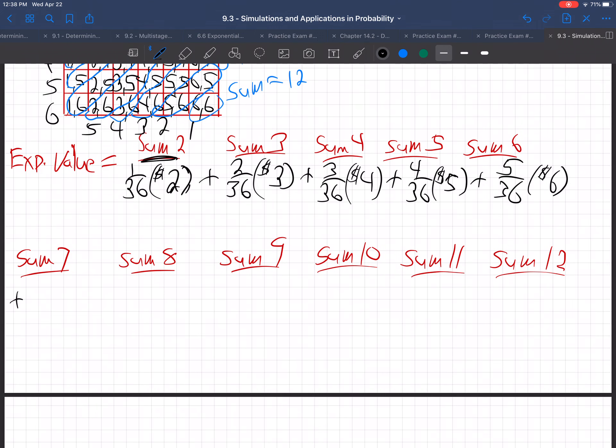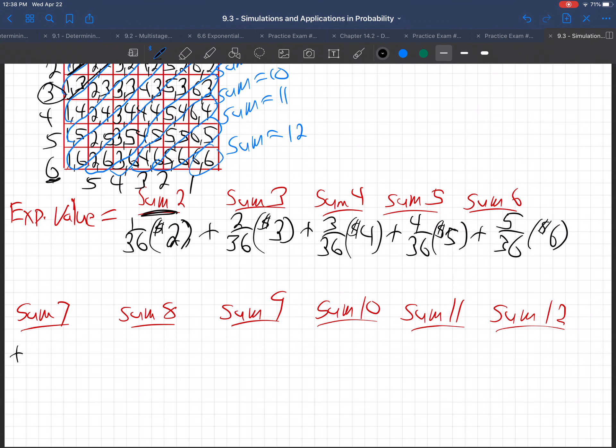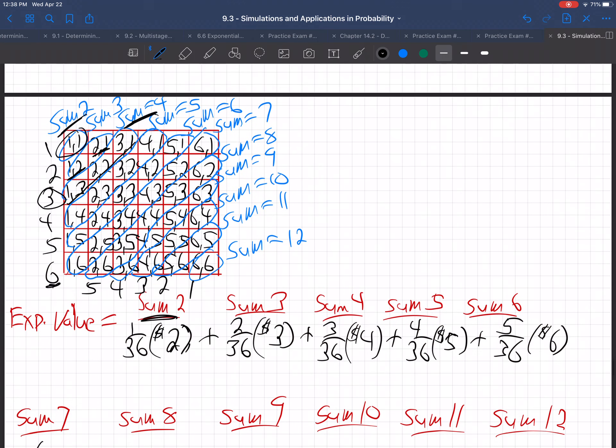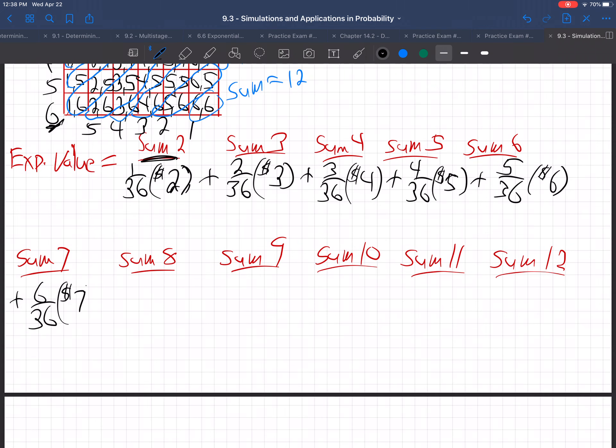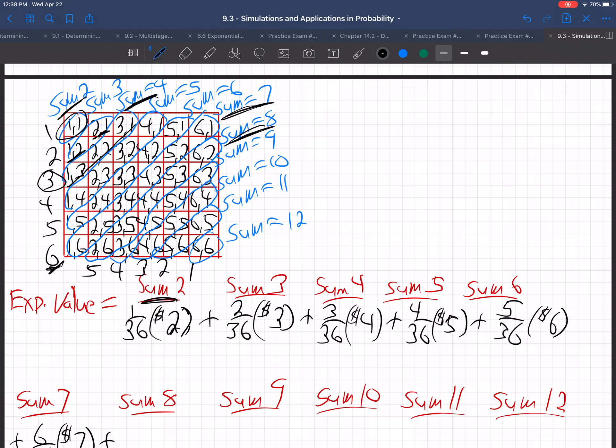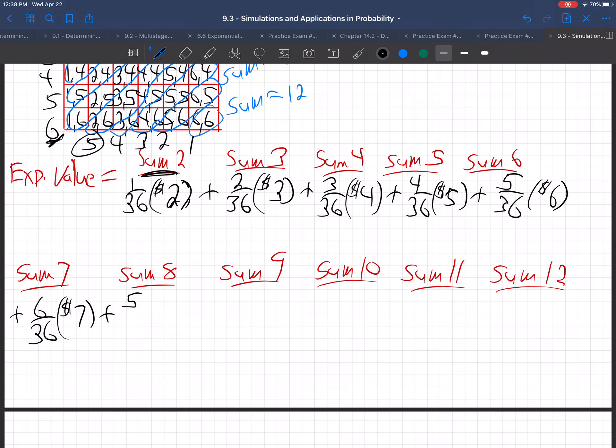Plus for a sum of 7, that's 6 out of 36, that's the main diagonal, the most likely sum when you roll 2 dice, 6 out of 36 times $7. Now sum of 8 starts going back down, 5 out of 36 times $8. 4 out of 36 for sum of 9, you get $9. 3 out of 36 for sum of 10, you get $10. 2 out of 36 for sum of 11, you get $11. And 1 out of 36, there's only 1 box, it's a sum of 12, you get $12. So we've got to take our calculator now and add all those up.